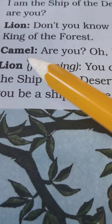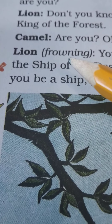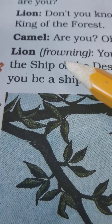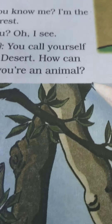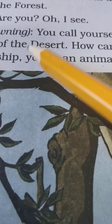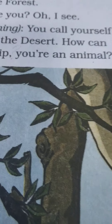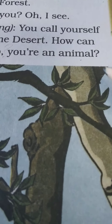We don't read this part in a play — only the camel says this dialogue. Lion frowning means when you pull your eyebrows together to look grumpy: 'You call yourself the ship of the desert? How can you be a ship? You're an animal!' The question mark — I'd put it here: 'How can you be a ship? You're an animal!' — with an exclamation. That's how I'm reading it.